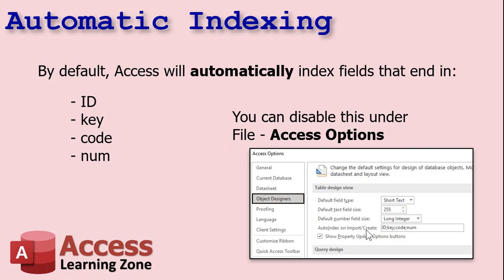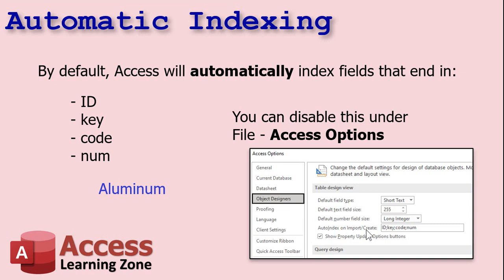Here's a interesting one: by default, Access will automatically index fields that end in ID, key, code, or num. So if you put a CustomerID in a table, even as a foreign key, it's going to get indexed with duplicates OK. But Access will also index a field named 'aluminum,' which I think is kind of silly. If you don't like this, you can disable it under File > Access Options > Object Designers, where you'll see Auto Index on Import/Create. I usually leave ID in there, but I get rid of key, code, and num. The extra indexes probably won't hurt much, but it's something to think about.